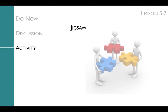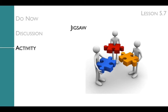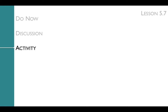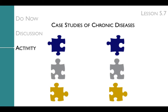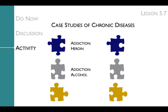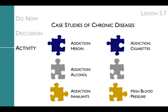During the Jigsaw, students will complete six Jigsaw readings, which allow them to explore the similarities and differences between chronic diseases. The chronic diseases covered include addiction to heroin, addiction to alcohol, addiction to inhalants, and addiction to cigarettes, as well as high blood pressure and diabetes.